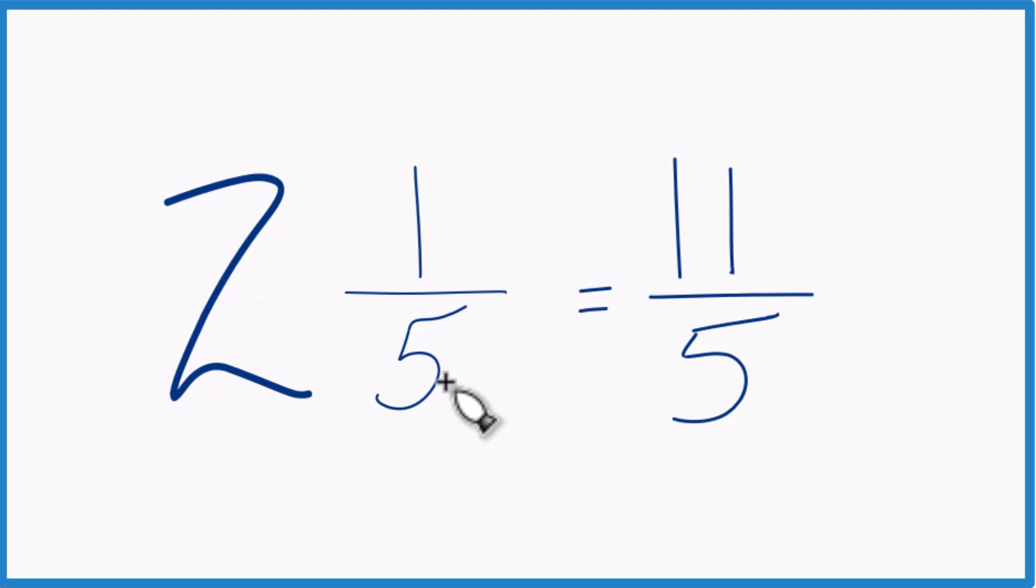So 2 and 1 fifth is a mixed number that equals 11 fifths. And these are equivalent, they have the same value, they're just written differently. They're different representations.